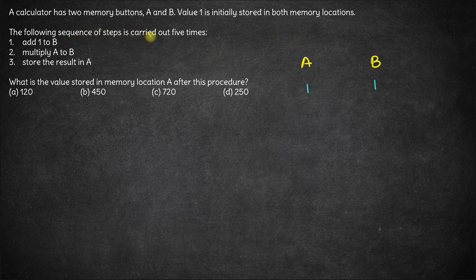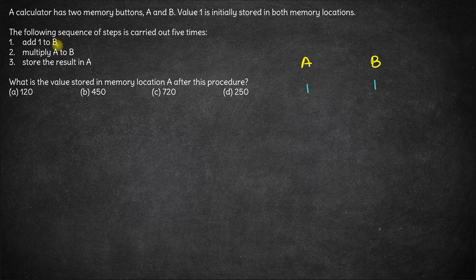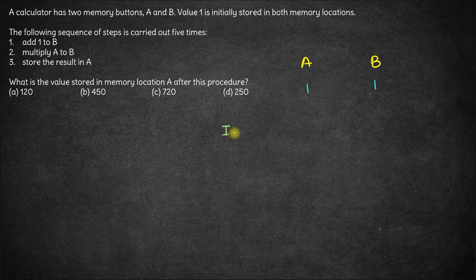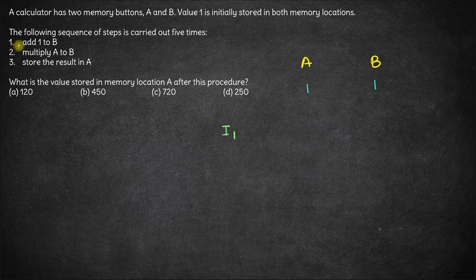The following sequence of steps is carried out five times: add 1 to B, multiply A to B, and store the result in A. Let's start with iteration 1. The iteration consists of three steps. First, add 1 to B, so B becomes 2.